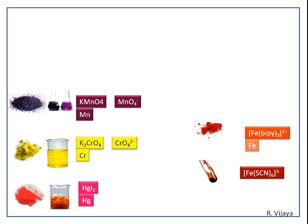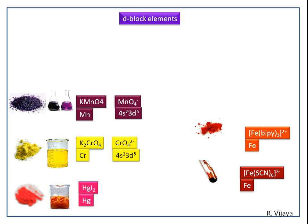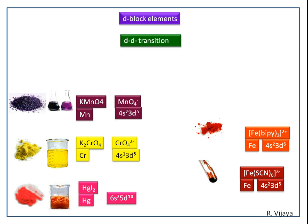In the fourth and fifth compounds, iron is the central ion. These are all d-block elements. We will now look at the valence electronic configuration of d-block elements in these complexes. D-block elements commonly show d-d transitions, but these d-d transitions produce weak absorption bands — their epsilon values are low.